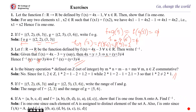If A = {a,b,c,d} and f = {(a,b),(b,d),(c,a),(d,c)}, show that f is 1-1 from A onto A. Here a maps to b, b maps to d, c maps to a, d maps to c. Every element of A has a unique image and every element has a preimage, so f is 1-1 and onto. Find f⁻¹ by interchanging the elements of each ordered pair: f⁻¹ = {(b,a),(d,b),(a,c),(c,d)}.